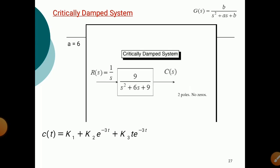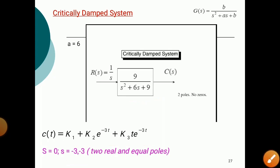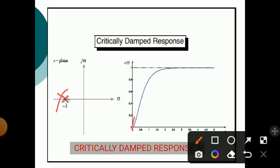For the critically damped system, we get two real and equal poles. Solving gives s = −3 and s = −3. The output equation is: C(t) = K₁ + K₂·e^(−3t) + K₃·t·e^(−3t). Note that t is multiplied in the last term. Here ζ = 1. The critically damped system has poles at the same location and provides proper damping.